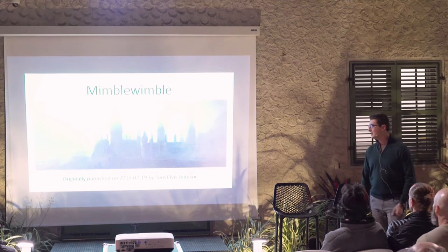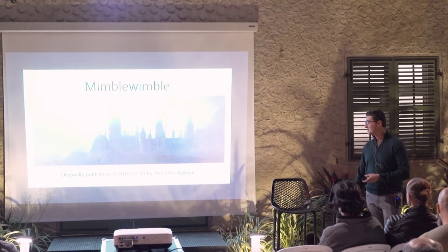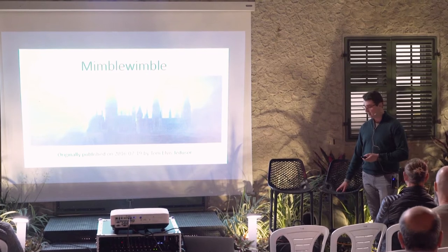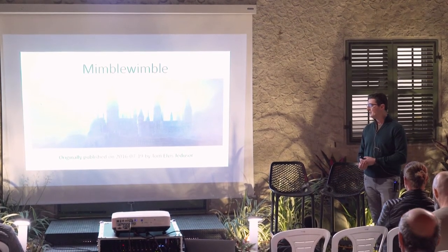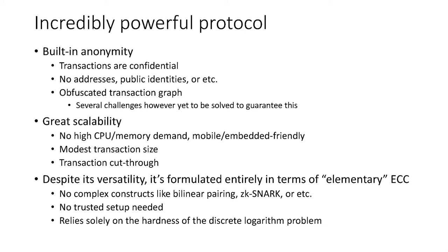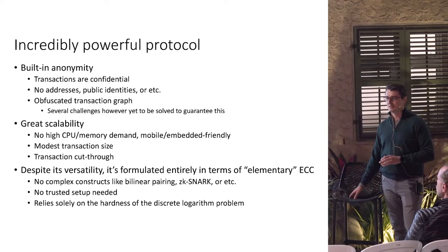Mimblewimble was first published nearly two years ago by someone anonymous who calls himself Tom Elvis Jedisor, which is Voldemort in French. This protocol is very powerful. It has built-in anonymity because it supports confidential transactions out of the box. There are no addresses — it's very different from other protocols like Bitcoin — and the transaction graph is obfuscated, also out of the box.